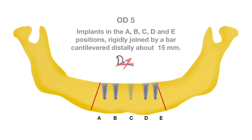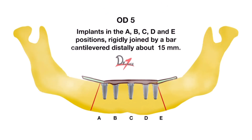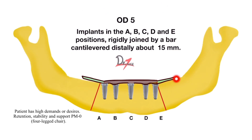Finally, we have OD5. Here we have five implants at A, B, C, D, and E positions, also joined by a bar, but the cantilever here is a bit more — it is cantilevered distally about 15 mm.